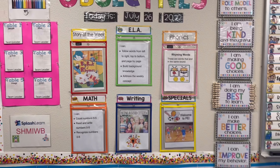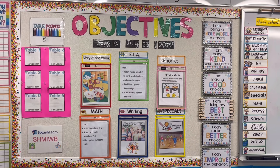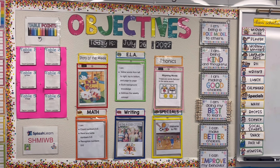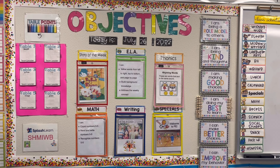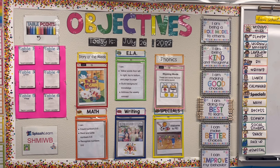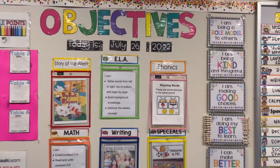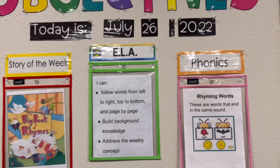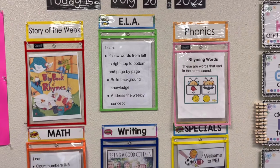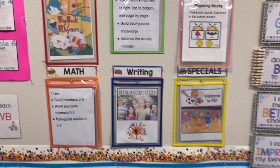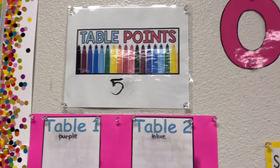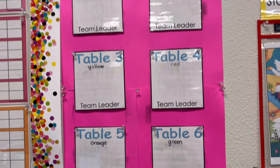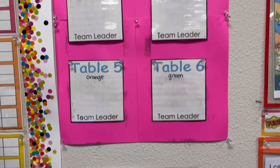And this is my objective board. As much as possible, I put there all the important things that we do in the classroom — it's clear and visually appealing. And of course, I do table points as well. So aside from my individual monitoring, I also have my table points.